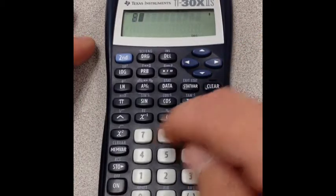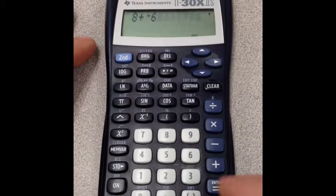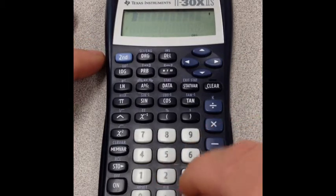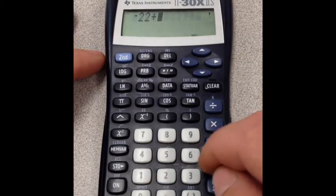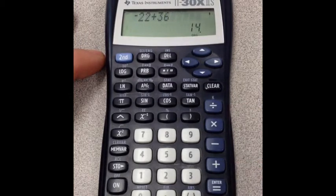What if I wanted 8 plus negative 6? 8 plus negative 6 equals 2. Negative 22 plus 36 equals 14.